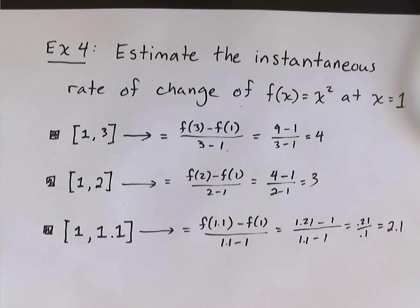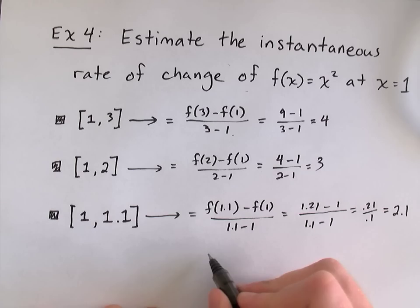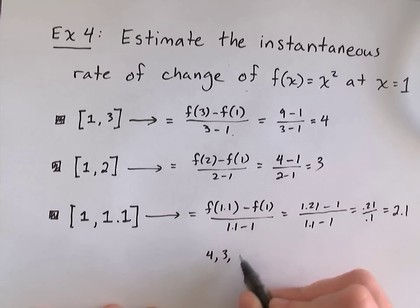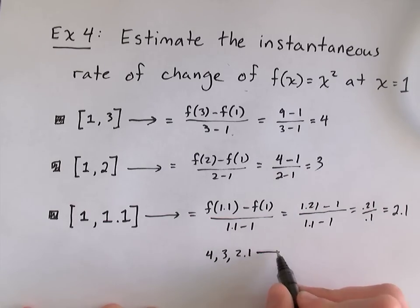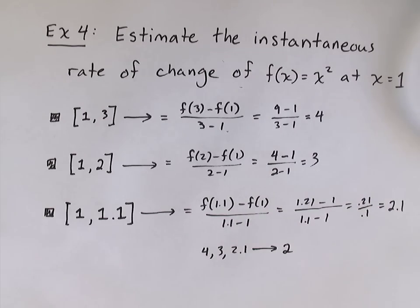We could keep going with this process and get a better and better estimate of the instantaneous rate of change. Or, we could just take a guess after the few examples that we did at where this was headed. We solved 4. Then we solved 3. Then we solved 2.1. If you guessed that the limit of this process is 2, you'd be correct. That is the instantaneous rate of change of x squared at x equals 1.